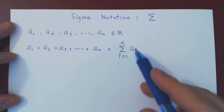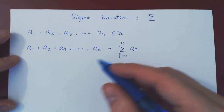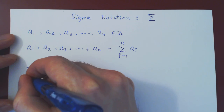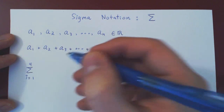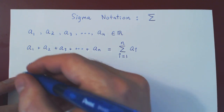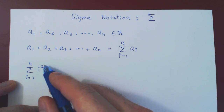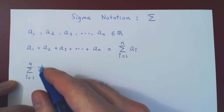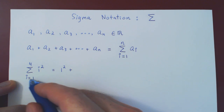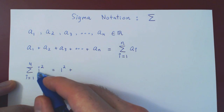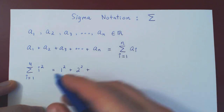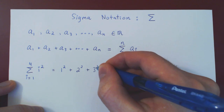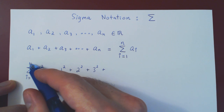Before we look at properties, let's look at a few examples. Suppose I say: sum i² as i goes from 1 to 4. I'm saying sum the terms i² as i goes from 1 to 4. When i is 1, we have 1². When i is 2, we get 2². When i is 3, we get 3². And finally when i reaches 4, we get 4².